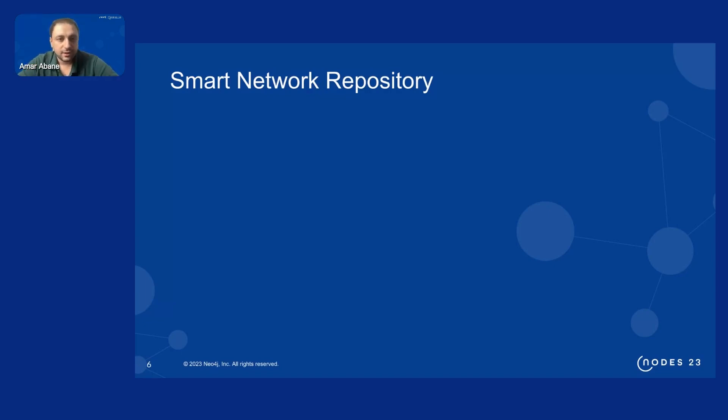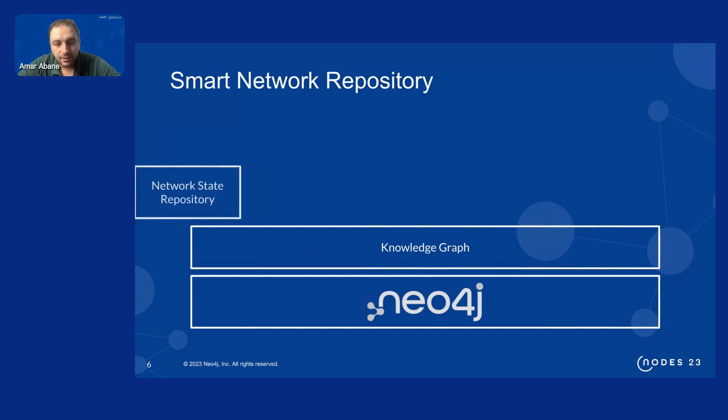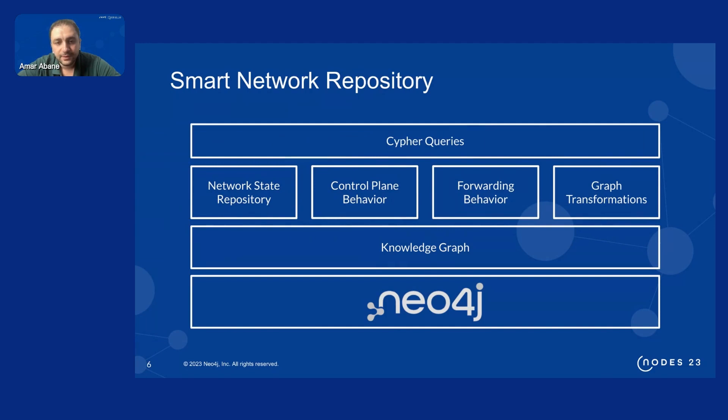The approach is to use Neo4j and define knowledge graph and then use the different libraries existing with Neo4j and custom library also which we develop for network functions and Cypher capabilities in terms of stored procedures to encapsulate these main functions which is the network state repository implement some control plane behavior of some protocols implement the forwarding behavior.